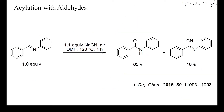In this example, a preformed imine was oxidized by air. The reaction was brought about by one equivalent of sodium cyanide and probably proceeded by intermediate formation of an aminonitrile. Its oxidation, however, somehow consumed cyanide, because with less than one equivalent of cyanide, no complete oxidation was achieved.